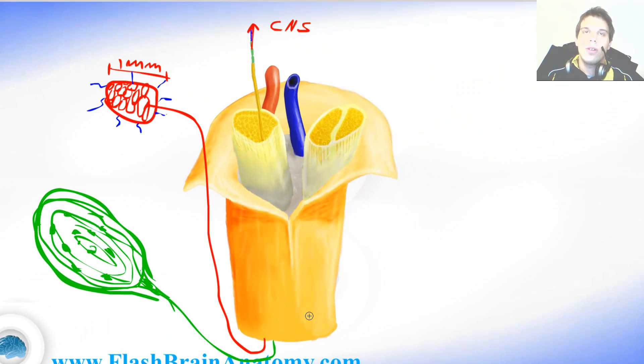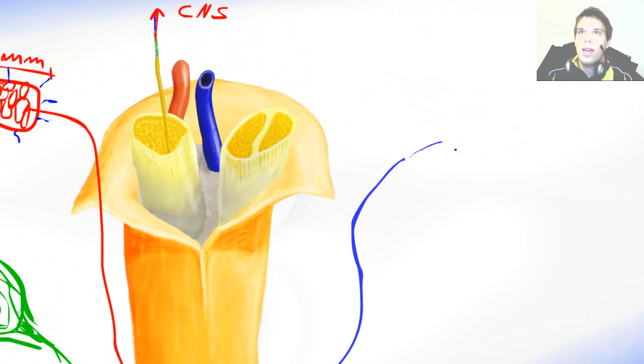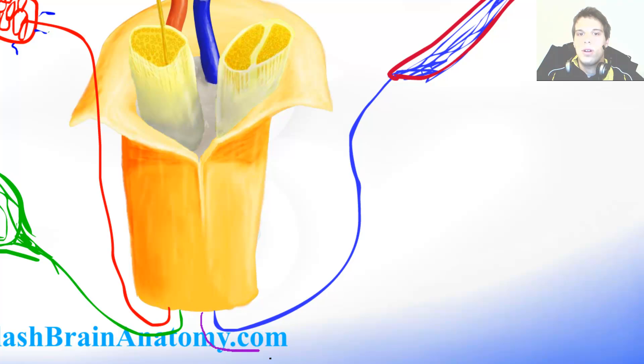There are also heat and cold receptors. The heat receptors are called the Ruffini corpuscles. They have the net out of nerve fibers with the capsule around it. The cold receptors are called the end bulbs of Krauss. They look something like this.